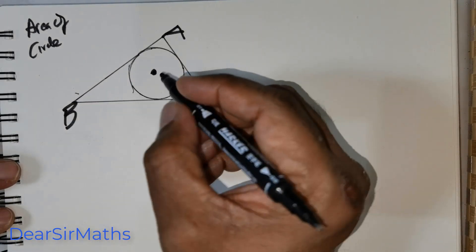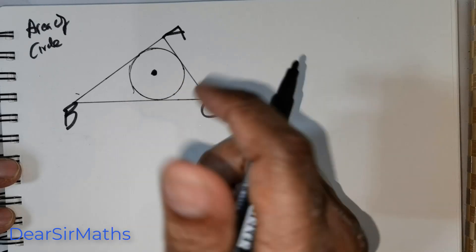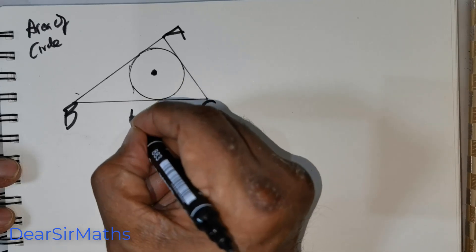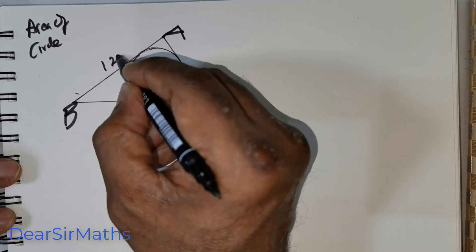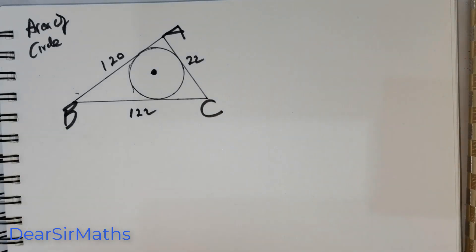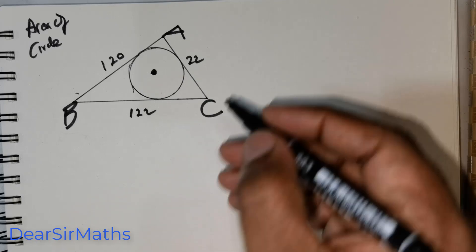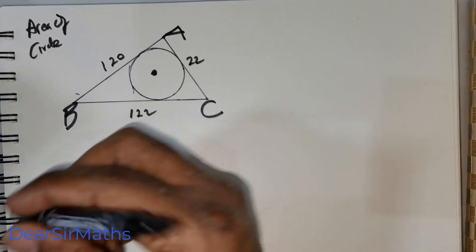Now, we got the following measurement given. This is given to be as 122 centimeters, this is 120 centimeters and this is 22 centimeters. Right, this is the data that's been given. We are expected to find the area of the circle.